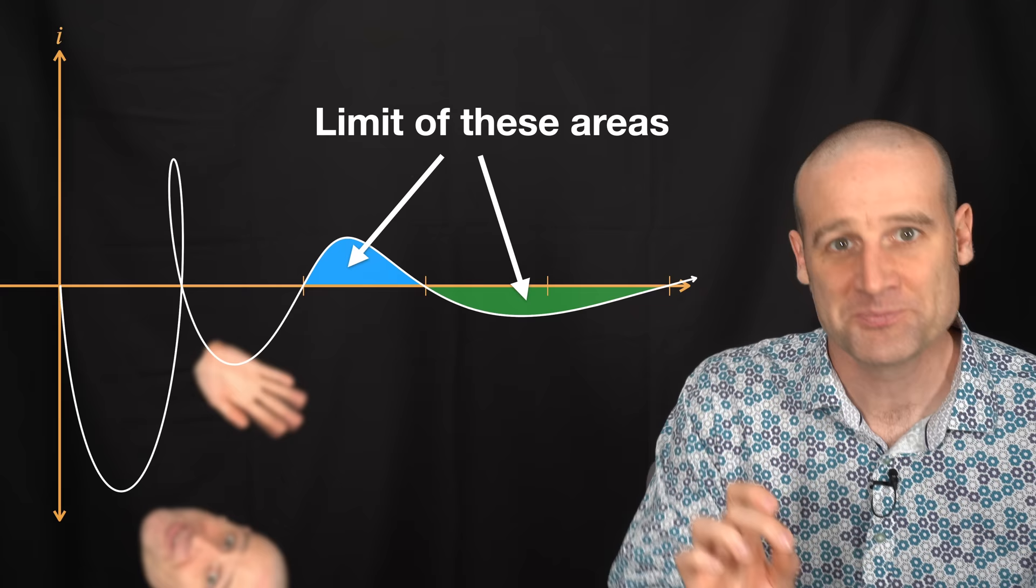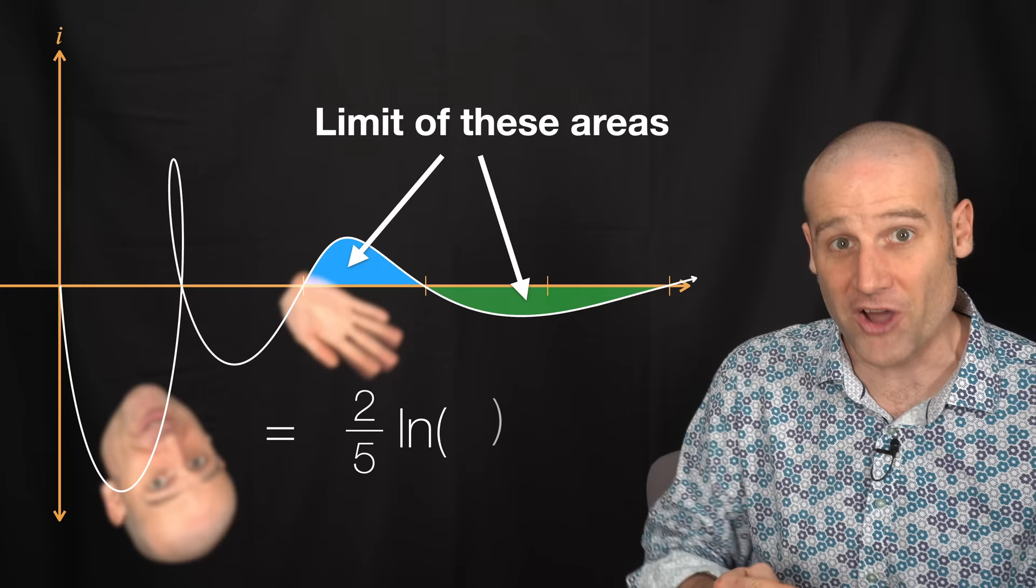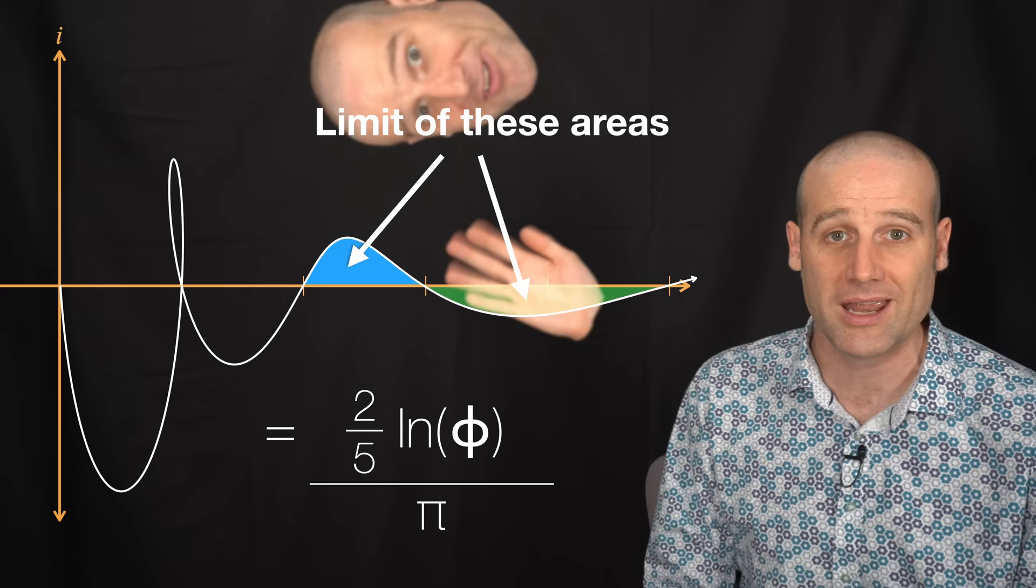And the limit is two fifths times the natural log of of course the golden ratio all divided by pi. So there you are I mean I was kind of expecting the golden ratio the fact that it was a natural log I'm like fair enough we're looking at areas but divided by pi.